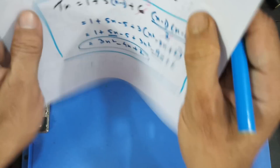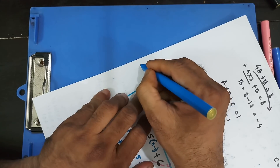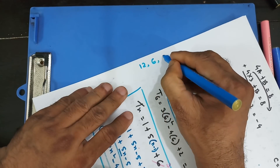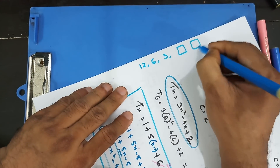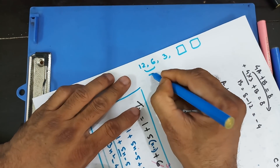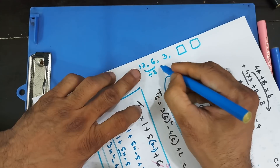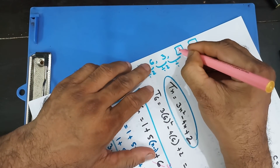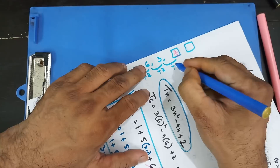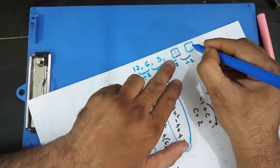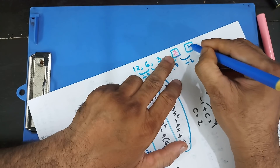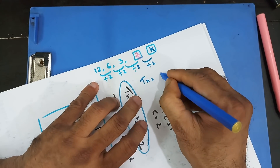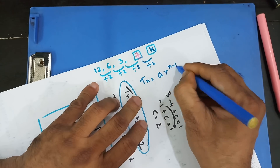Lastly, there's another type of sequence like: 12, 6, 3... What are the next terms? If you look closely, each term is divided by 2 — that gives 6, then 3, then 3/2, then 3/4. For this type, the nth term formula is: T(n) = A · R^(n−1), where A is the first term and R is the common ratio.